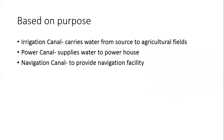Based on purpose, there are three types of canals: irrigation canals, power canals, and navigation canals. Irrigation canals carry water from the source to agricultural fields. Power canals supply water to the powerhouse, and navigation canals are used for navigation facilities.